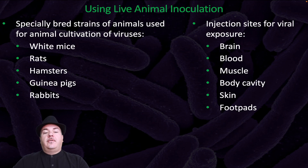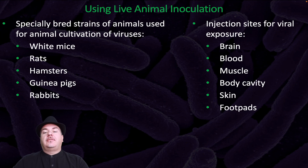In regards to in vivo methods, we can use live animal inoculation. We can have specifically bred strains of animals used for animal cultivation of viruses — for example, using white mice, rats, hamsters, guinea pigs, or rabbits. We can also have injection sites for viral exposure in the brain, blood, muscle, body cavity, skin, or foot pads.